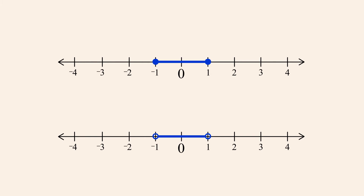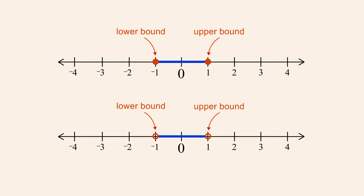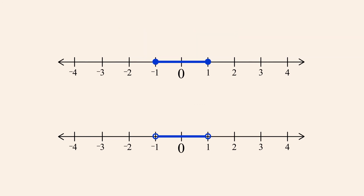So left and right endpoints act as lower and upper bounds for the numbers in an interval. No number contained in an interval is less than its lower bound or greater than its upper bound. In a closed interval, the left endpoint is the minimum or smallest number in the interval and the right endpoint is the maximum or largest number in the interval.